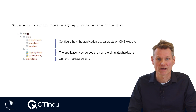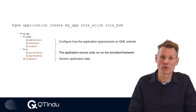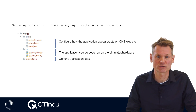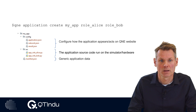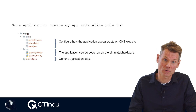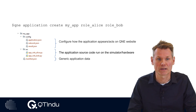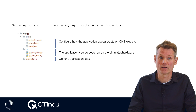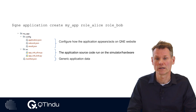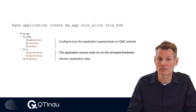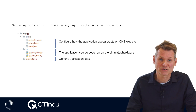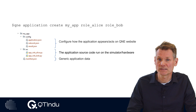After executing the application create command, we get the following application file structure. The application file structure consists of a number of configuration files in the config directory that configure how the application appears and acts on the Q&A website. There is also application source code — in our case a Python file for each application role in the source directory. These files implement the quantum network application we run. A manifest JSON holds the generic application data.